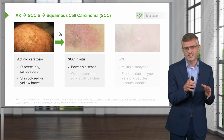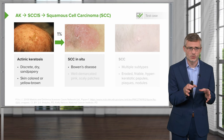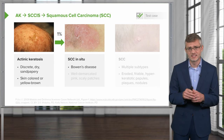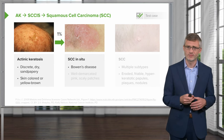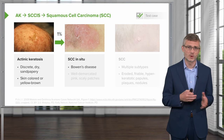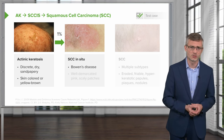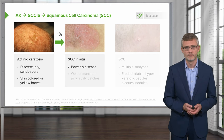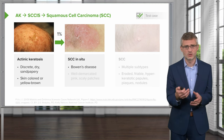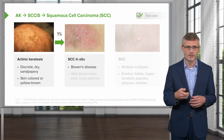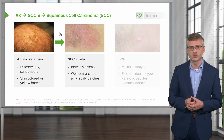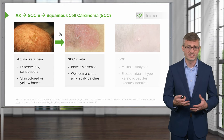1% of actinic keratoses will evolve into squamous cell carcinoma in situ per year. So if you've got 50 of them, there's a 50% chance that one of those might evolve into squamous cell carcinoma in situ each year. When you've got squamous cell carcinoma in situ, especially a background of several of them — these well-demarcated pink scaly patches — it's called Bowen's disease.